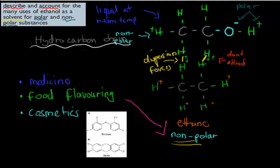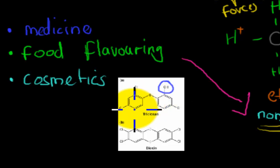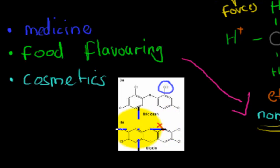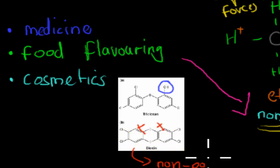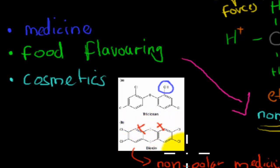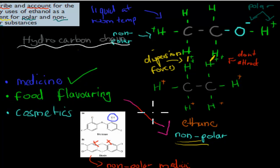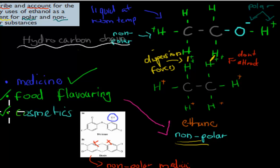For example, the top medication shown has an OH group, making it polar — it dissolves in water, no problem. But the lower medication has no OH group — it's nonpolar — so it won't dissolve in water, but it will dissolve in ethanol. The same applies to food flavorings: if some don't dissolve in water, we add ethanol to dissolve them. For cosmetics such as makeup, ethanol is often used because some makeup components don't dissolve in water but do dissolve in ethanol.